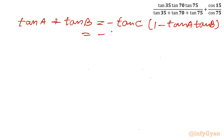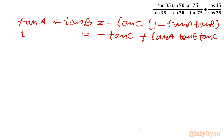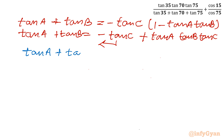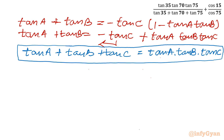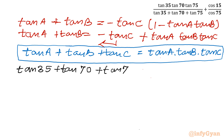Multiplying the right-hand side gives minus tan C plus tan A tan B tan C. The left-hand side is tan A plus tan B. Taking the minus tan C term to the left-hand side, we arrive at the trigonometric identity: tan A plus tan B plus tan C equals tan A times tan B times tan C. Substituting A=35, B=70, C=75 gives tan 35 plus tan 70 plus tan 75 equals tan 35 times tan 70 times tan 75.